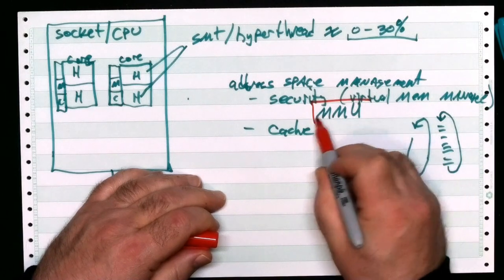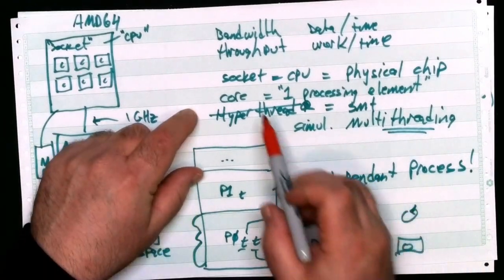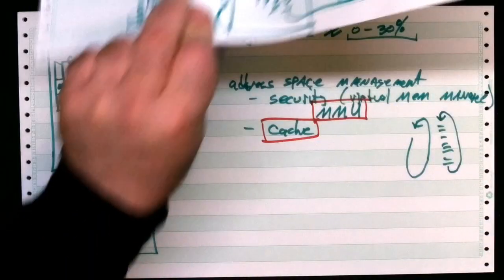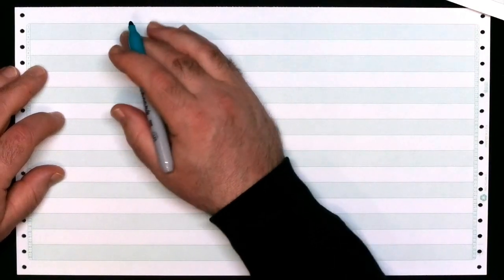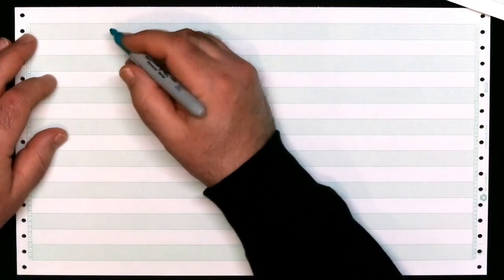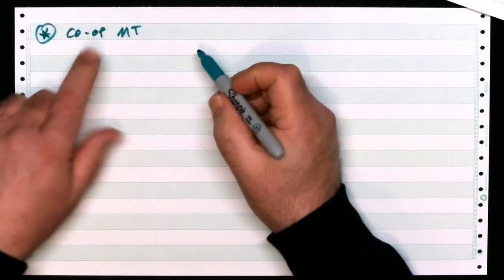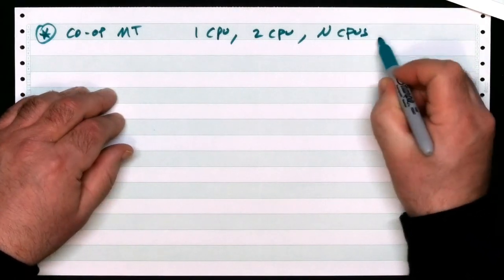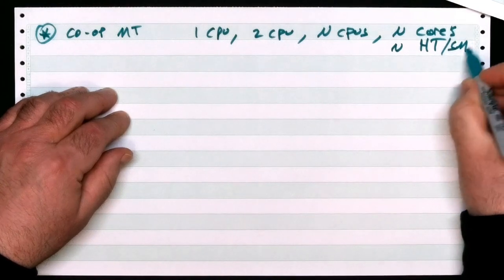So now you know a little bit more about what an MMU is for, and a cache. You know what a core is, what a socket is, what bandwidth and throughput mean. You can have cooperative multitasking with one CPU, two CPUs, N CPUs, N cores, or even N hyperthreads - SMT.